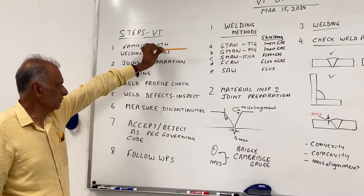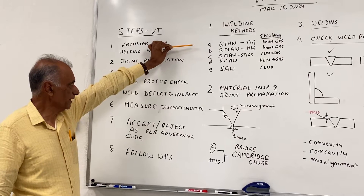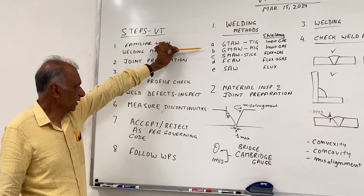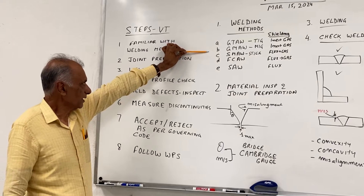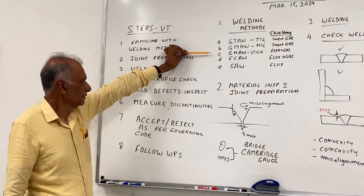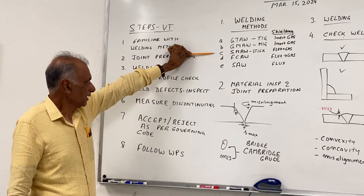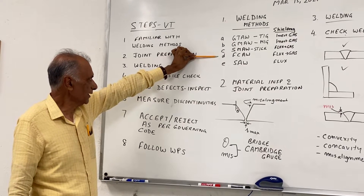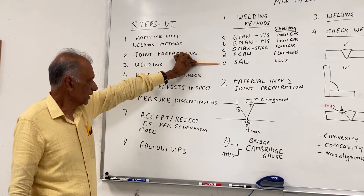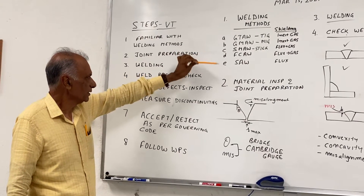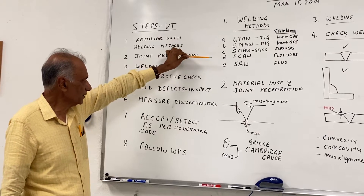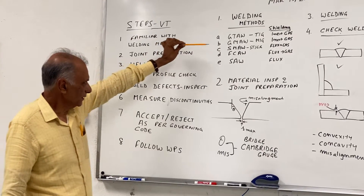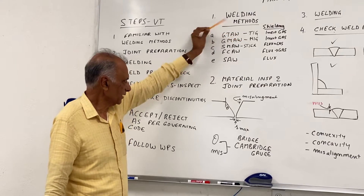The five most common welding methods are gas tungsten arc welding, gas metal arc welding, shielded metal arc welding, flux core welding, and submerged arc welding. All of these are the common methods you should be familiar with. These are also known by their slang names: TIG, MIG, and STICK welding.